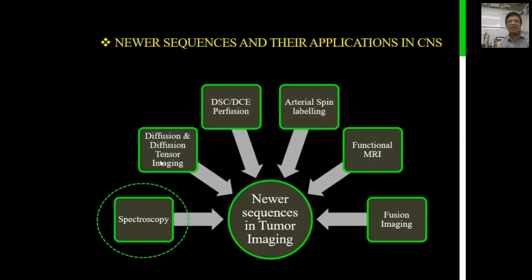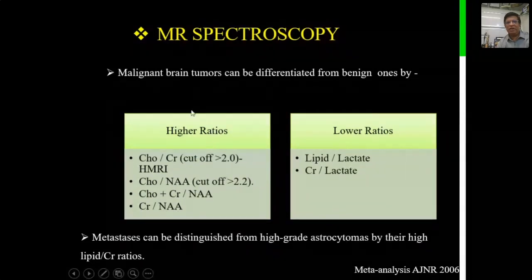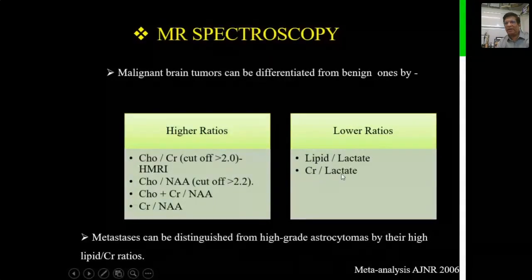Let's start with spectroscopy and its role in differentiating malignant brain tumors from benign ones. Based on a meta-analysis published in AJNR in 2006, higher ratios of choline to creatine with a cutoff of 2, and choline plus creatine to NAA and creatine to NAA, are used to determine a high-grade tumor. Lower ratios of lipid to lactate and creatine to lactate are also considered indicators of a high-grade tumor.